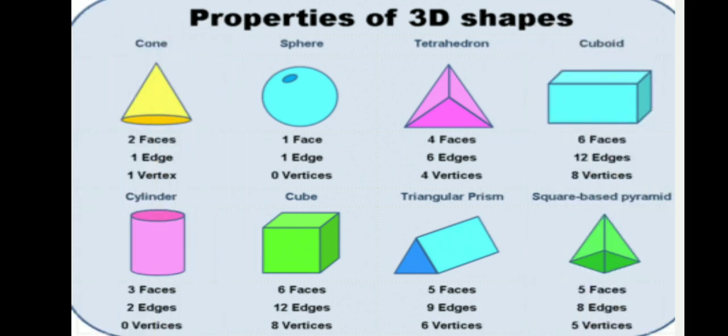Now, the properties of 3D shapes: A cone has 2 faces, 1 edge, 1 vertex. A sphere has 1 face, 1 edge, 0 vertices. A tetrahedron has 4 faces, 6 edges, 4 vertices. A cuboid has 6 faces, 12 edges, 8 vertices. A cylinder has 3 faces, 2 edges, 0 vertices. A cube has 6 faces, 12 edges, 8 vertices. A triangular prism has 5 faces, 9 edges, 6 vertices. A square based pyramid has 5 faces, 8 edges, 5 vertices.